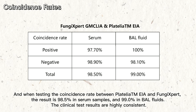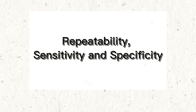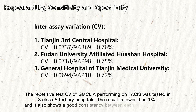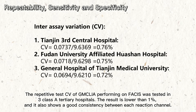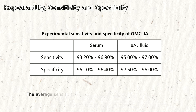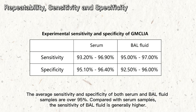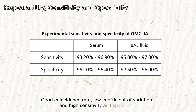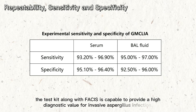The clinical test results are highly consistent. The repetitive test CV of GM CLIA performing on FASIS was tested in three Class A tertiary hospitals; the result is lower than 1%, and it also shows good consistency between each reaction channel. The average sensitivity and specificity of both serum and BAL fluid samples are over 95%. Compared with serum samples, the sensitivity of BAL fluid is generally higher. Good coincidence rate, low coefficient of variation, and high sensitivity and specificity confirm that the test kit along with FASIS is capable of providing high diagnostic value for invasive Aspergillus infection.